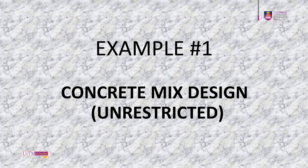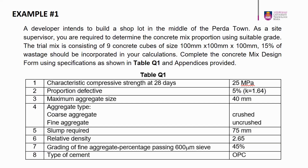A developer intends to build a shop lot in the middle of Purda town. As a site supervisor, you are required to determine the concrete mix proportion using a suitable grade. The trial mix consists of nine concrete cubes of 100 mm cube dimension, and 15% wastage should be incorporated in your calculations.